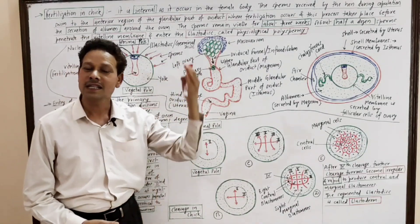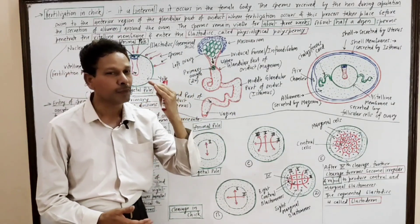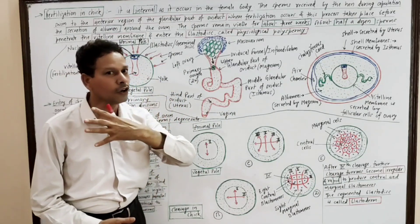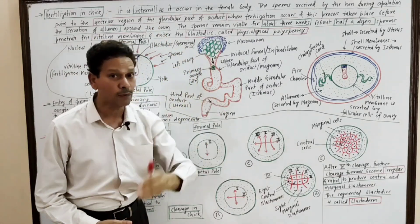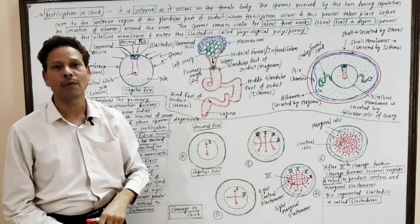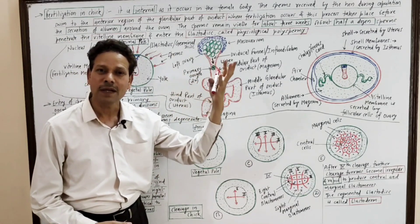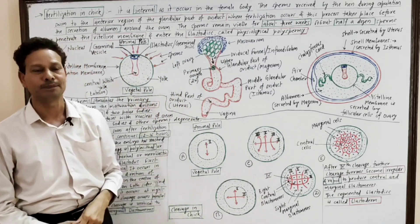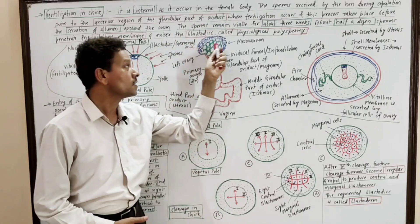This ovary is the left ovary, and this oviduct is the left oviduct. In case of birds, in case of hen, it is a characteristic feature that the right ovary is lacking. Only the left ovary and the left oviduct are present and well developed. While the right ovary is absent and the right oviduct is greatly reduced and non-functional. This ovary is attached by a membranous fold called the mesovarium.